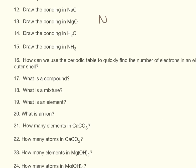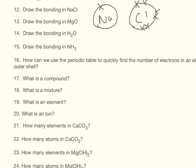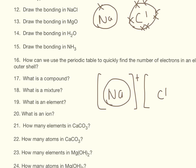Bonding in NaCl: we have sodium with one electron in its outer shell, and chlorine with seven electrons in its outer shell. We need some square brackets, a positive charge, square bracket Cl, minus charge, and eight electrons. So this electron here has moved over here.